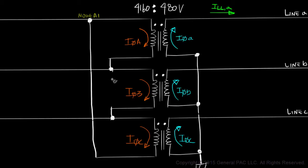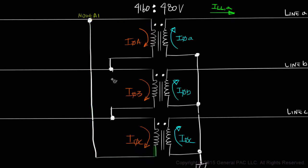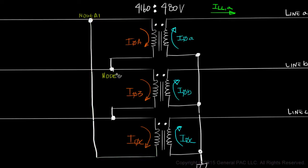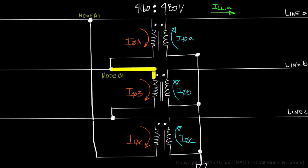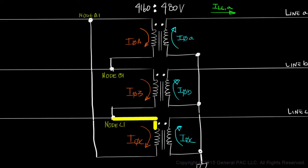We will call Node A1 the node that connects the polarity side of winding A and the non-polarity side of winding C. We'll call Node B1 the node that connects the polarity side of winding B and the non-polarity side of winding A. And lastly, we'll call Node C1 the node that connects the polarity side of winding C and the non-polarity side of winding B.